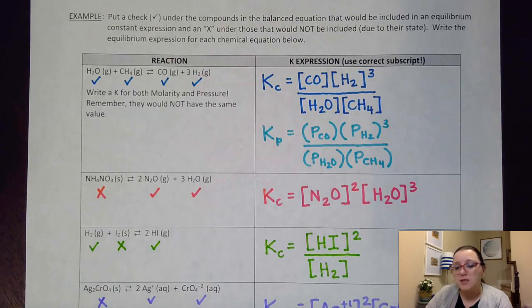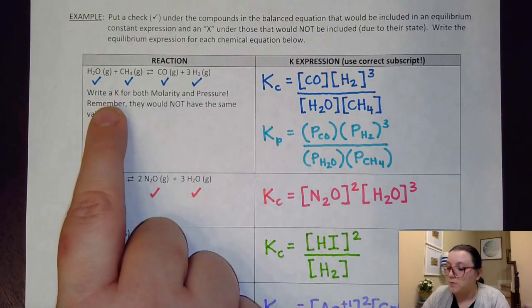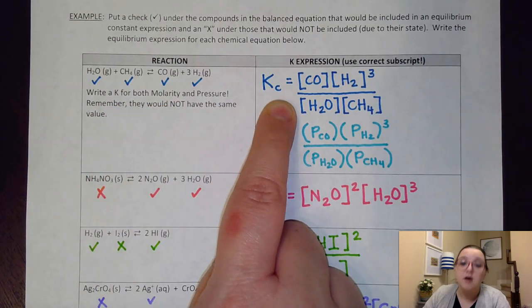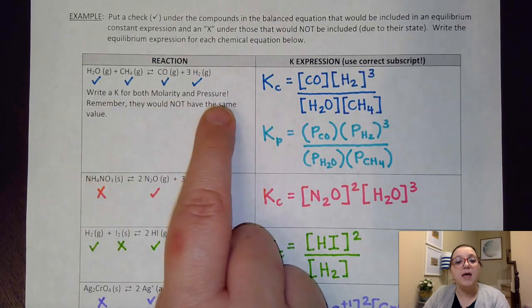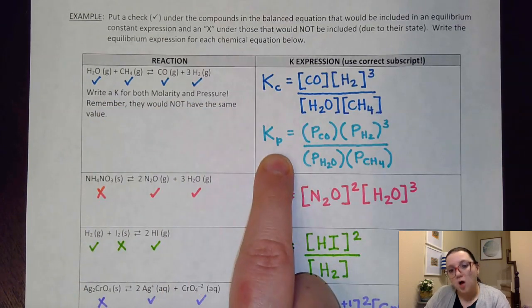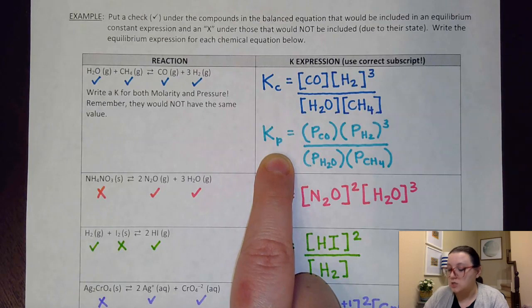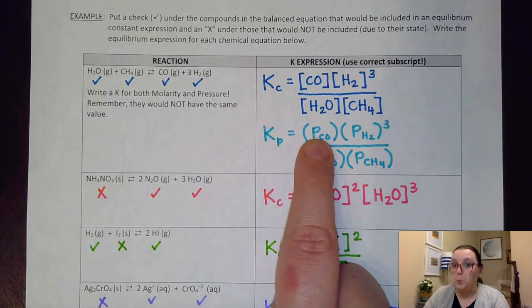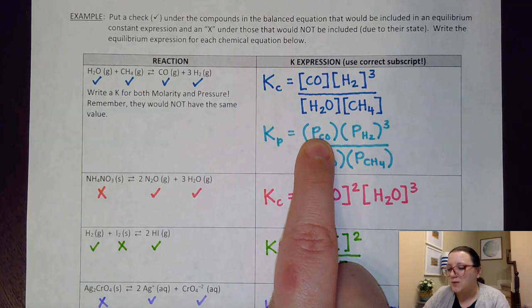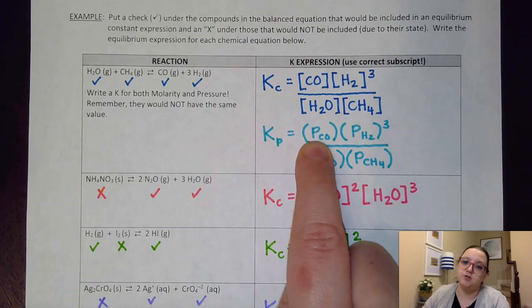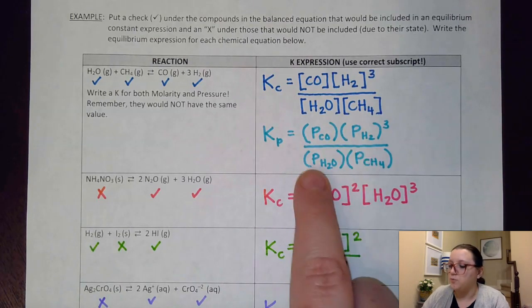And so what I can do here is put my two products, CO and H2, raise them to their coefficients. CO had a coefficient of one over here. H2 had a coefficient of three. And so I included those. Of course, one I don't have to write. Just leaving a blank would indicate that it's one. And then I'm going to put that over my two reactants, both raised to a coefficient of one. Now, this one is interesting because it asks us to write also a K for both molarity and pressure. So the molarity one, I would call a Kc for concentration. But then I'm going to write a Kp. Because these are all gases, I can write that pressure equilibrium expression.